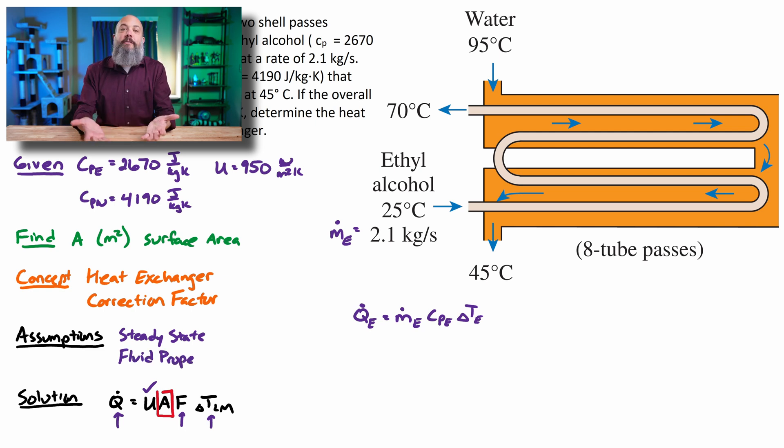So 2.1 kg/s is the mass flow rate of ethyl alcohol. C_P 2670 was given. And I'm going to make a couple of assumptions here. One is that the system's at steady state. So this mass flow rate is not changing. And also that the fluid properties are not changing.